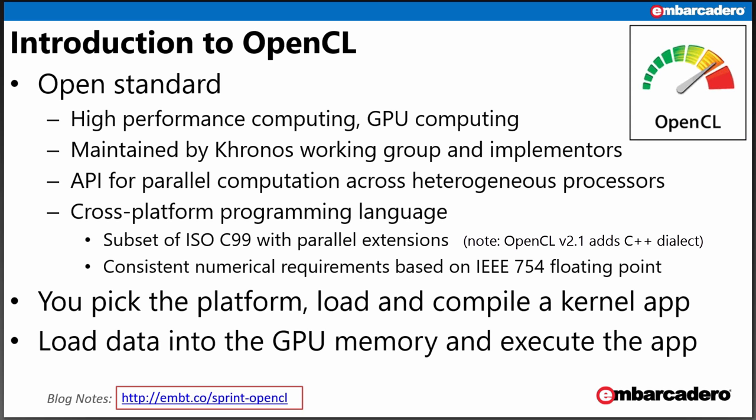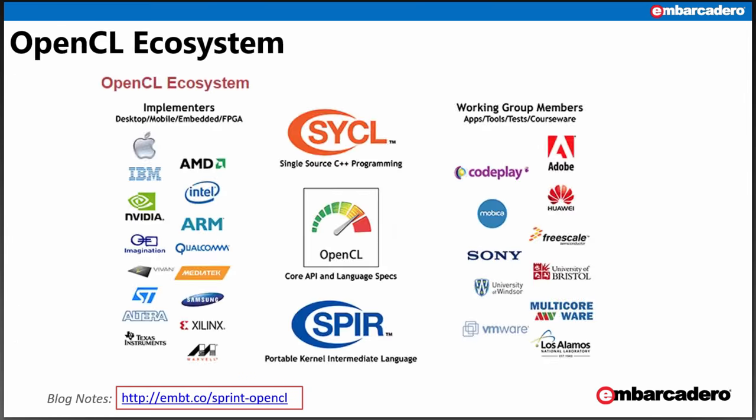OpenCL is an API for parallel computing across heterogeneous GPU graphics processors. It uses a cross-platform programming language, which is a subset of ISO C99 with extensions for parallel computing. It uses the IEEE 754 floating point format for consistent numerical calculations across different platforms and GPUs. You pick the platform or processor, load and compile a kernel application using the ISO C99 extended language, load your data into the GPU, and execute the app. There's a large OpenCL ecosystem comprised of working group members as well as implementers.